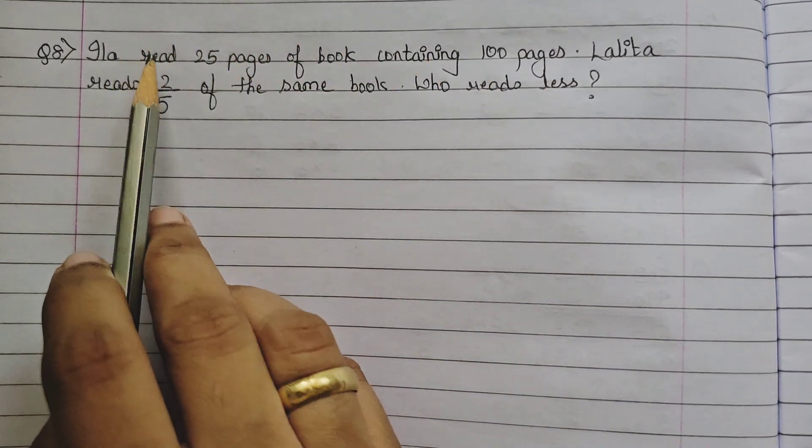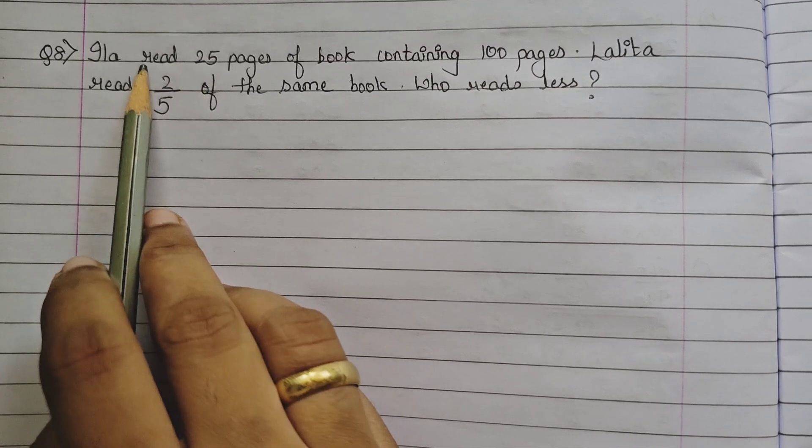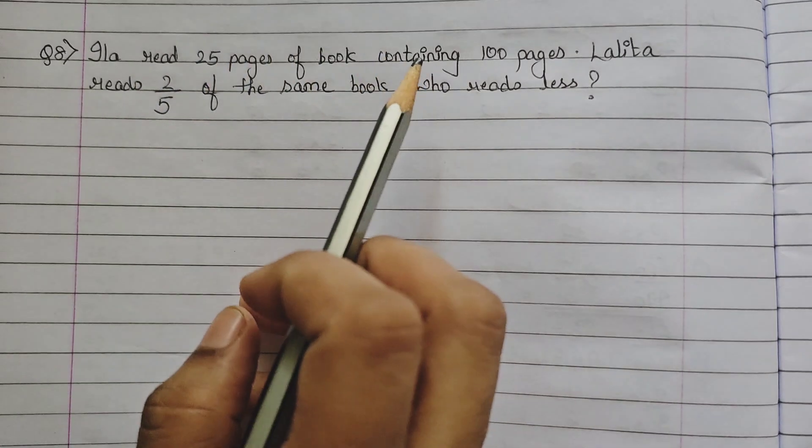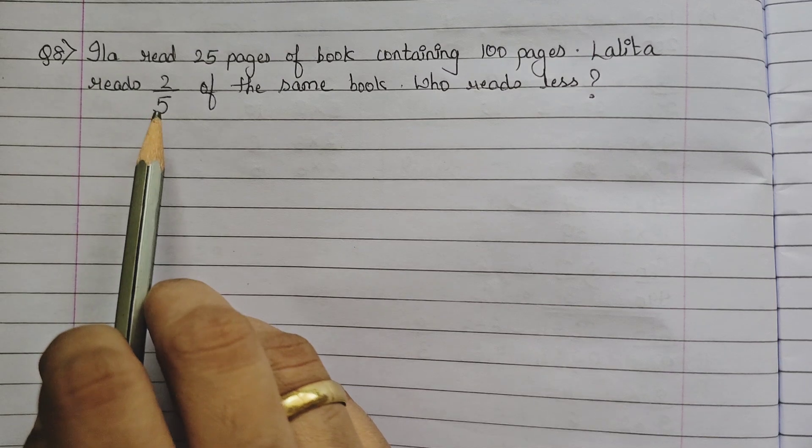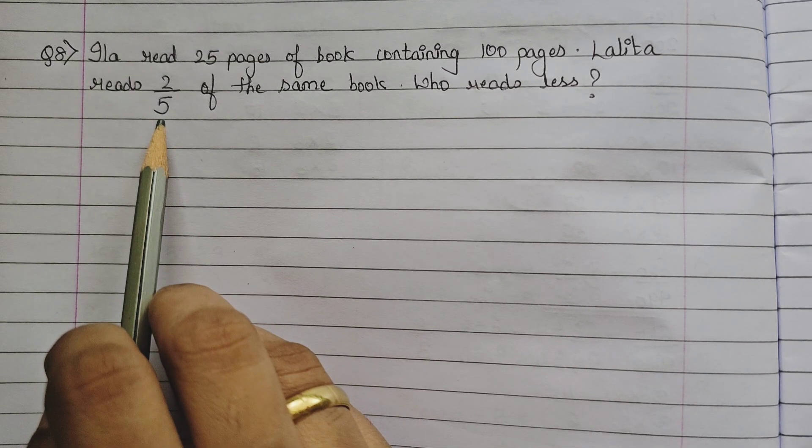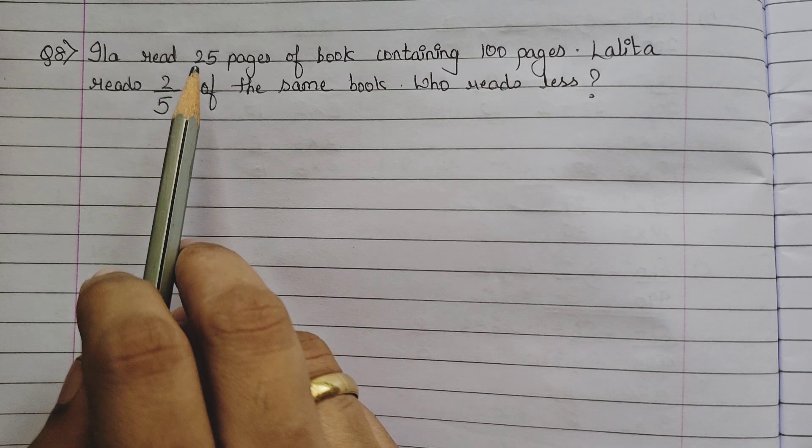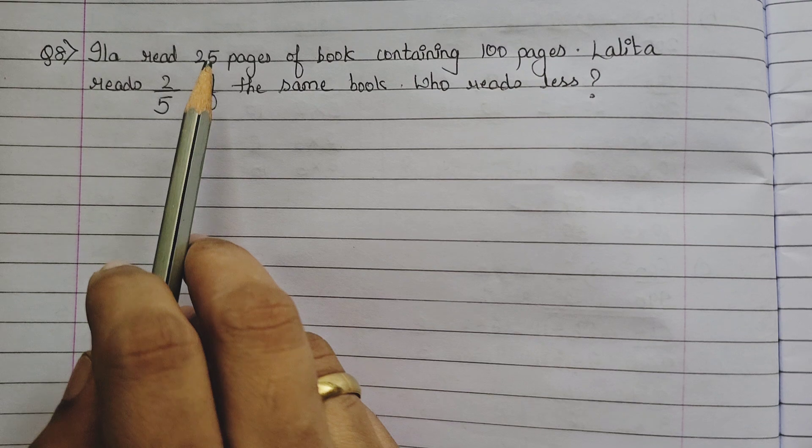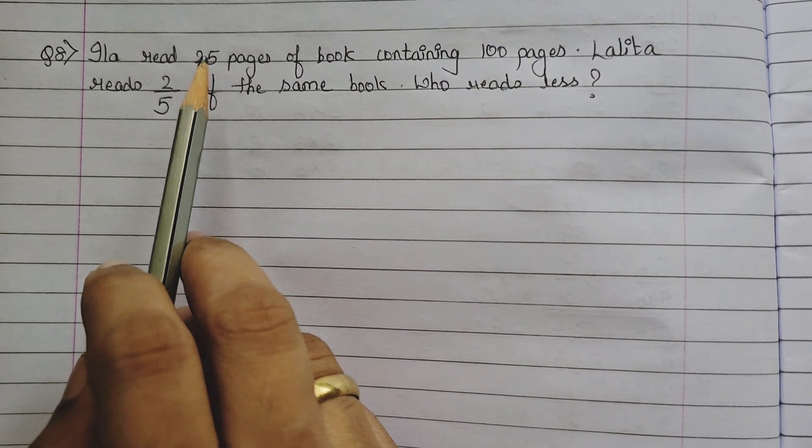So first, what you observe over here is, for Ila, they have given how many pages of the book she has read, and for Lalita, they have given you the fraction of the book she has read. So, one is already in the fraction, the other one is in the form of a word problem. So, what we are going to do is, first we will try to solve the word problem and find the fraction for Ila.